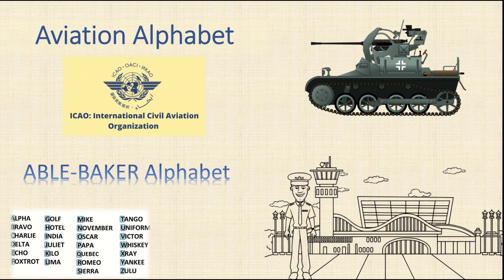Prior to the 1950s, many countries had their own means of communication for air travel. However, due to many letters sounding too similar and the need for smooth communication, ICAO simplified a standard list to be used by everyone. The International Civil Aviation Organization, ICAO, developed a list of codes that correspond to the letters of the standard English alphabet, meant to simplify communication between aviation professionals dealing with air traffic throughout the world.